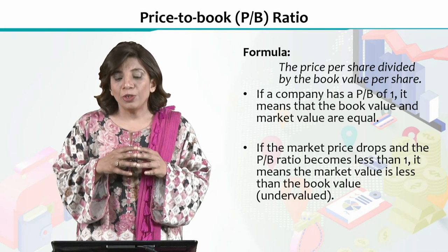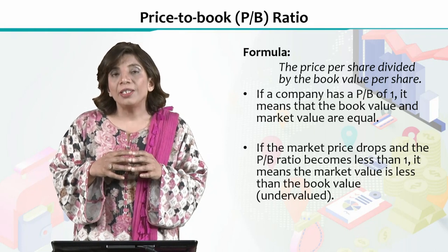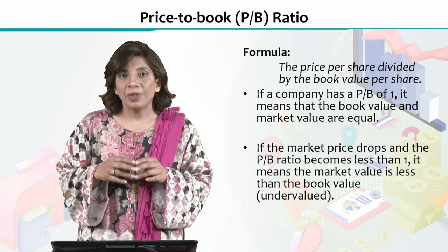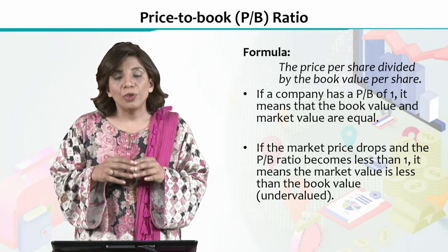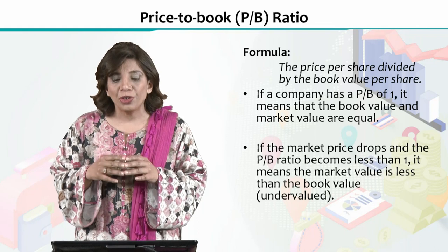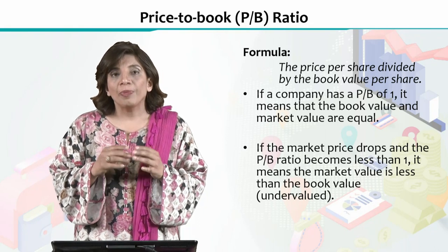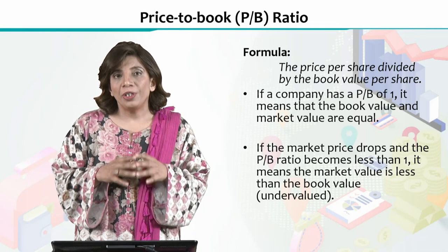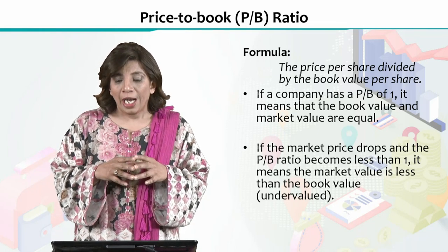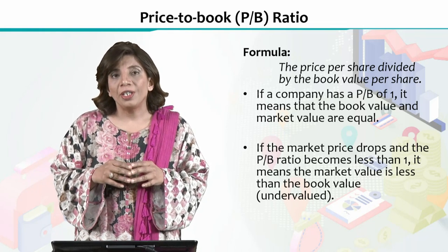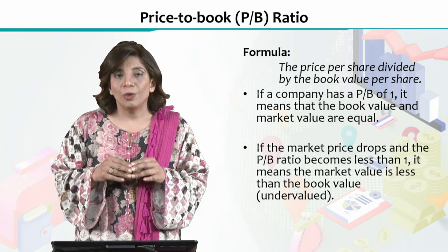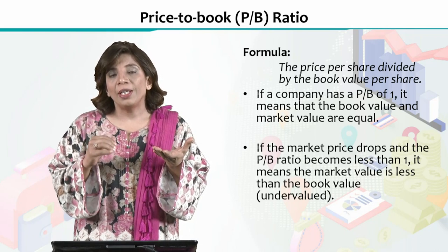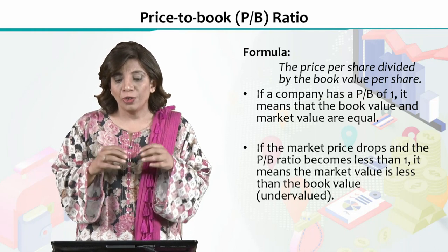When we look at this Price to Book Ratio, there is a very simple formula used to calculate it. When we say Price to Book Ratio, we are putting the market price of our share in the numerator and the book value per share in the denominator. So the market price will be divided by the book value per share, and the number you get is the Price to Book Ratio.